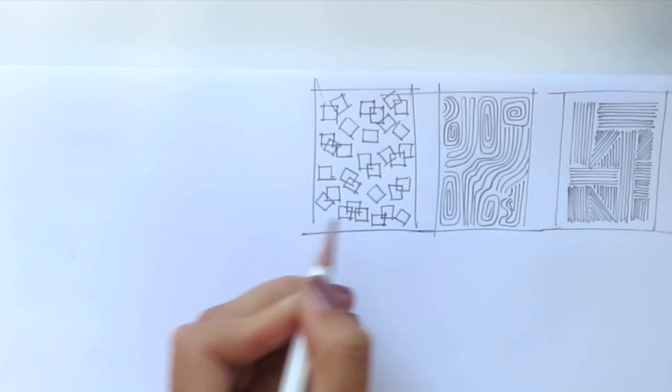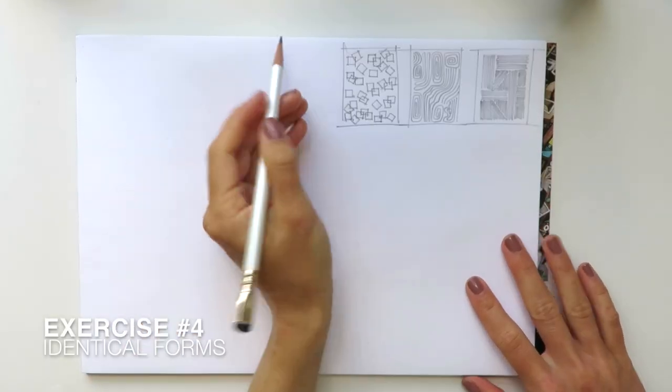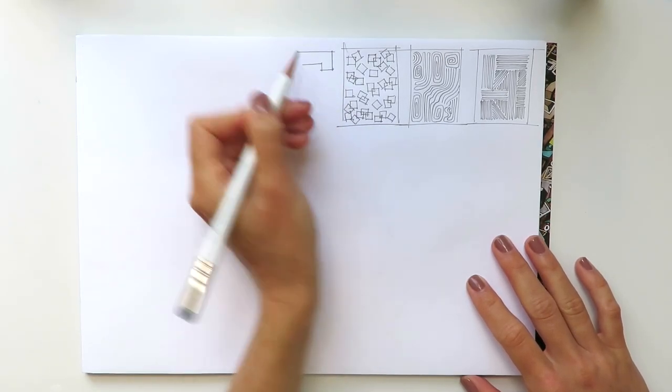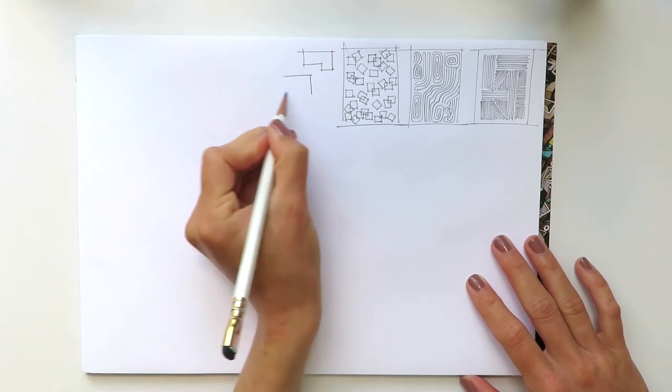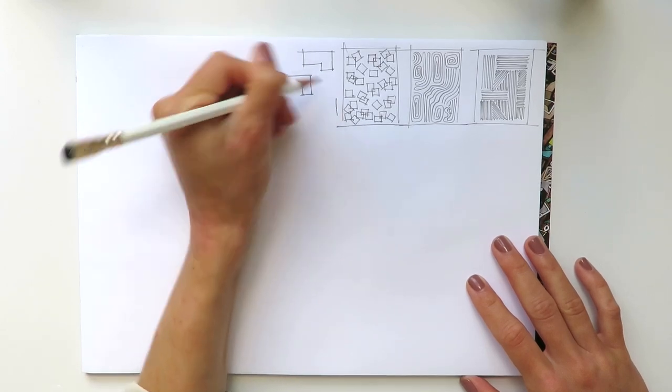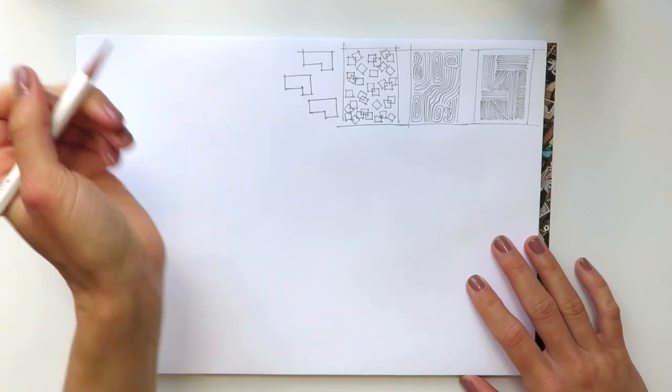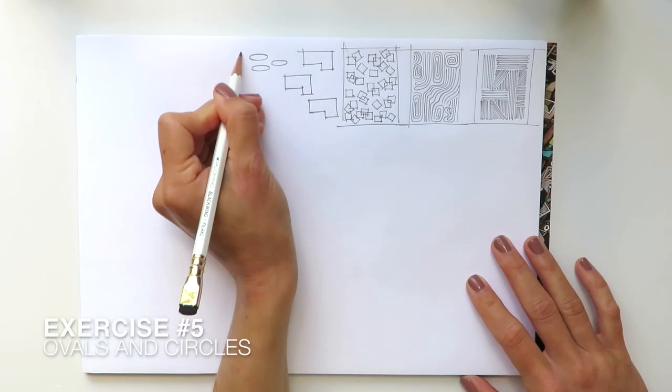All right, so exercise number four, and here we select any form we like. So for example, I selected this combination of two merged rectangular forms, and we just copy it. So we try to keep the same size, the same idea. Exercise five is ovals.